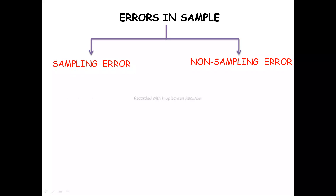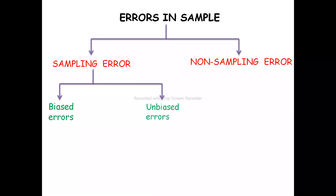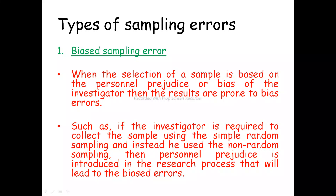Sampling errors are again of two types: biased error and unbiased error. Biased sampling error occurs when the selection of a sample is based on the personal prejudice or bias of the investigator. For example, if the investigator is required to collect a sample using simple random sampling but instead uses non-random sampling, personal prejudice is introduced into the research process. A biased error is when a person intentionally commits a mistake due to personal benefit.